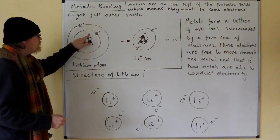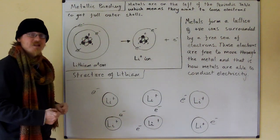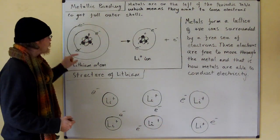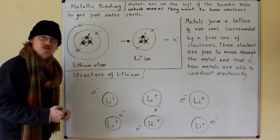Lithium has three protons in its nucleus and four neutrons, and it's orbited by three electrons. Two in the first shell, one in the second shell.